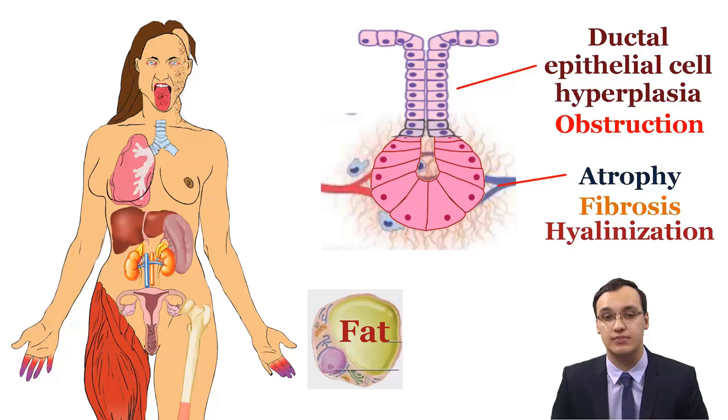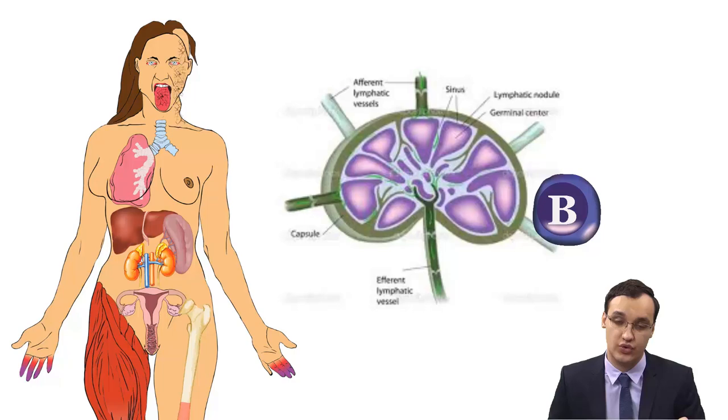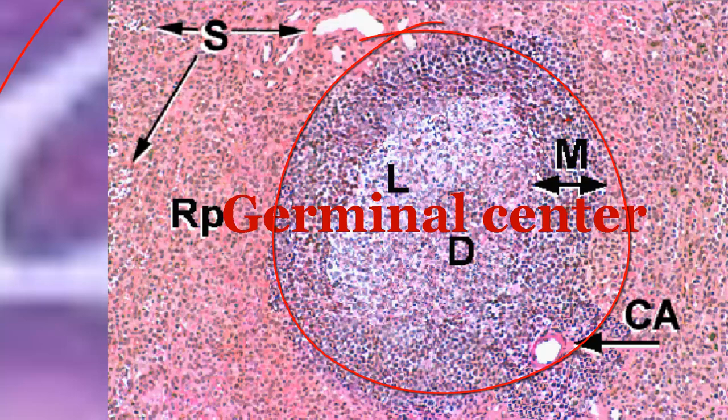B lymphocytes are also infiltrating these glands, and these B lymphocytes can cause lymphoid follicles with germinal centers in the salivary glands. The lymphocytic infiltration can be so intense that it looks like a lymphoma. In fact, these patients are about 40 times more likely to develop B cell non-Hodgkin lymphomas.